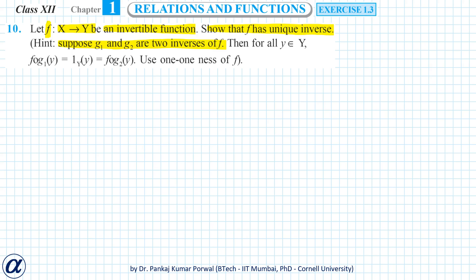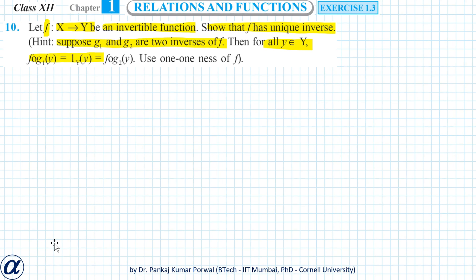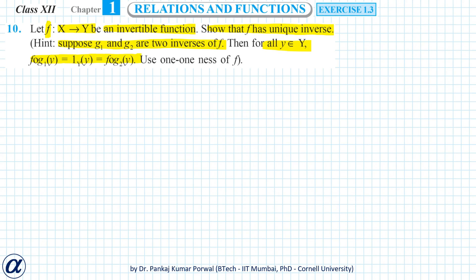Then for all y in capital Y, f∘g1(y) equals to identity function of y equals to f∘g2(y). Then use one-oneness of f and that's what we will do. We are given that f from x to y is invertible.